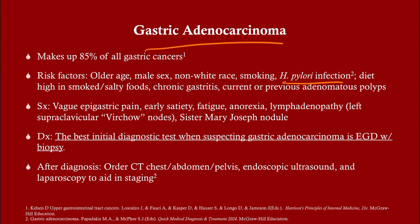If you suspect gastric adenocarcinoma — a patient with early satiety and cancer-like symptoms — the best initial test is an EGD, because cancer is always a histologic diagnosis. After you've made the diagnosis, you need a staging workup: CT of the chest, abdomen, and pelvis; endoscopic ultrasound looking for lymph nodes; and laparoscopy. All of those will help stage and plan our approach to treatment.